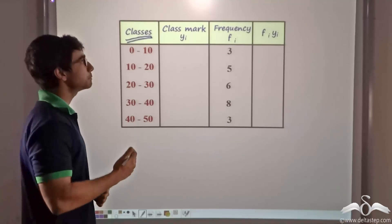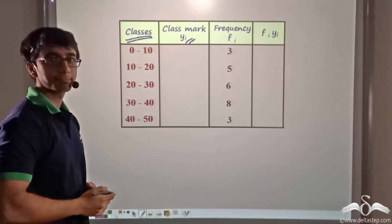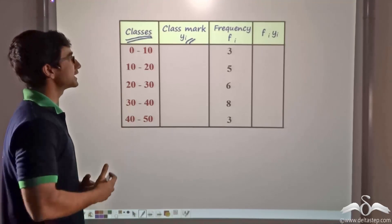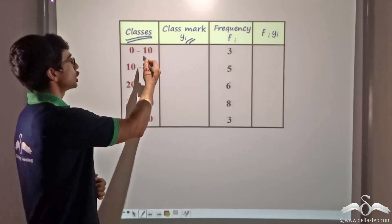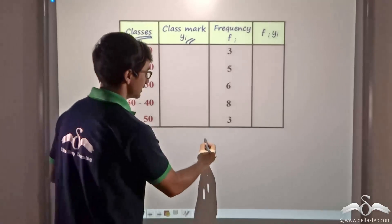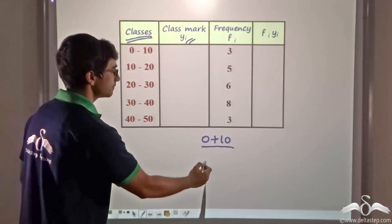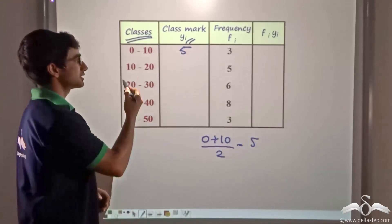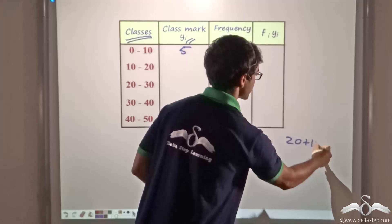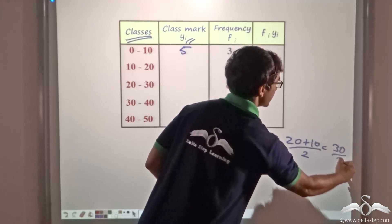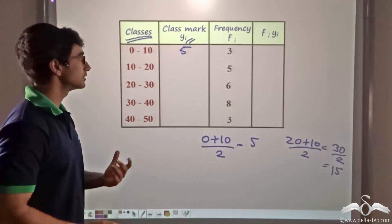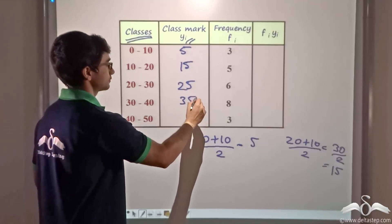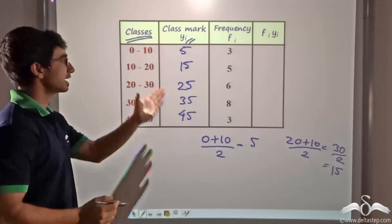This technique is applied with the help of class mark, represented as Yi. The class mark of a class is a value which represents the entire class. For ease of calculation, the class mark is taken to be the average of the upper limit and the lower limit. So for the first class, the average is zero plus ten divided by two, which is five. For the second class, ten plus twenty divided by two gives thirty by two, which is fifteen. In a similar manner we calculate the class marks for the rest of the classes, and these values represent Yi.